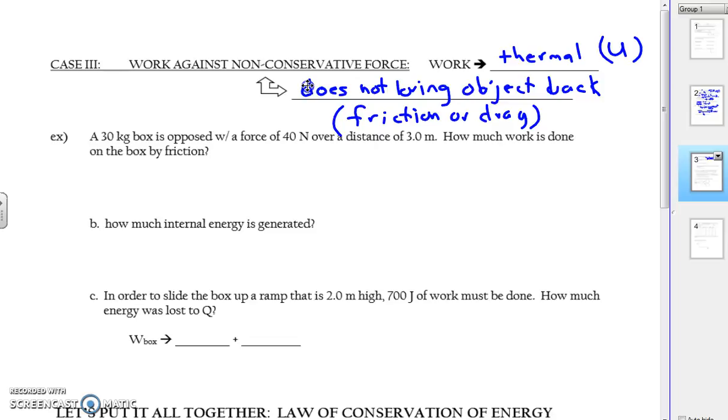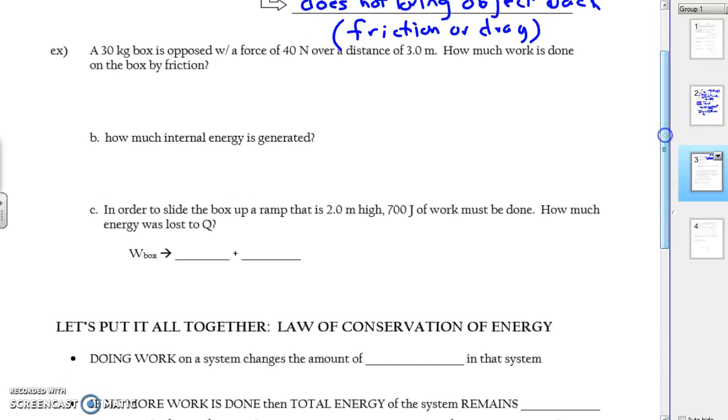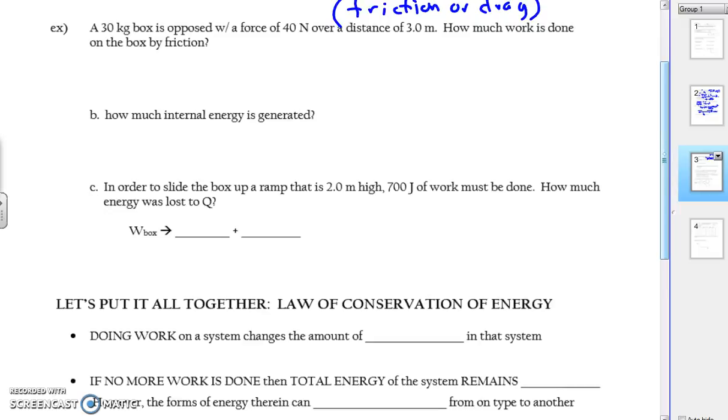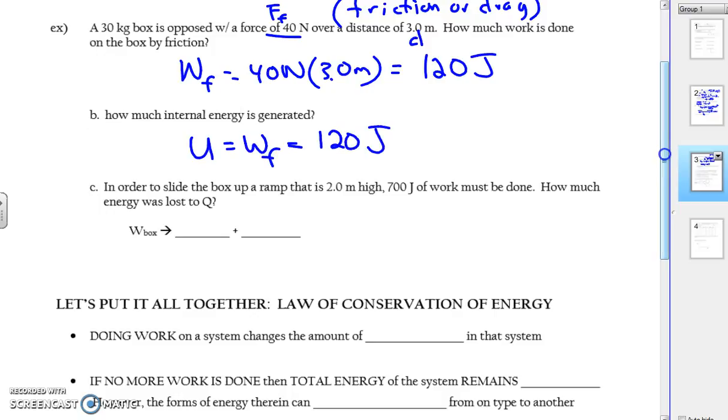So let's look at a simple example, and by the way, the equation for U is simply the force of friction multiplied by whatever distance over which it acts. It's really just a work equation, so we don't have a special equation for it. So a simple example: a 30-kilogram box is opposed by a force of 40 newtons, so that's going to be the force of friction, over a distance of 3 meters. How much work is done by friction? Well, pretty easy. The work done by friction is going to be 40 newtons times 3.5 meters, and that of course is 120 joules. How much internal energy is generated? Well that's easy. The amount of internal energy generated is equal to the work done by friction, which is 120 joules.